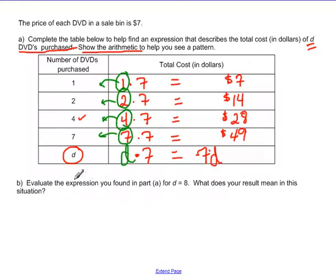So now let's do the second part. Evaluate the expression you found in part a for d equals 8. So here d equals 8. So let's take our expression. Our expression was 7d. And I'm going to go ahead and use this form of the expression. Because usually, if we have both a variable and a constant that are being multiplied together, we like to show the constant first. We'll see that over and over again through this class.